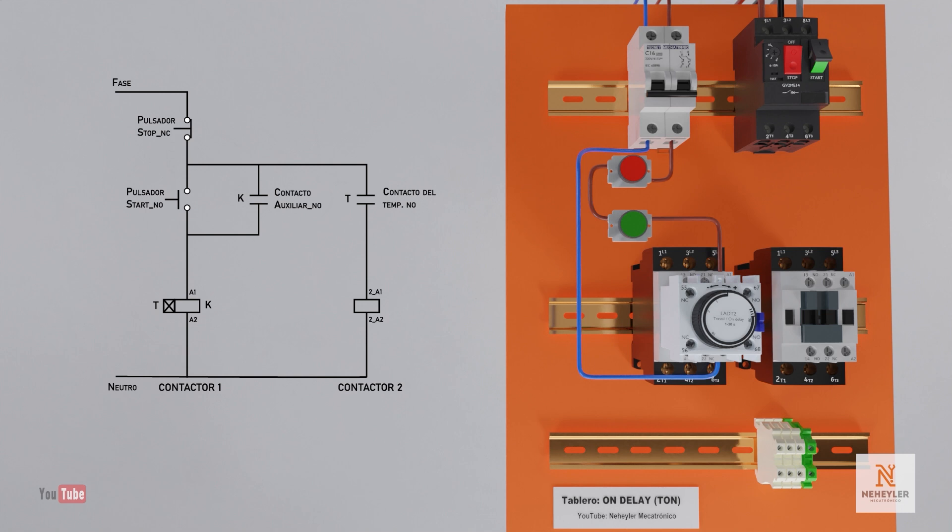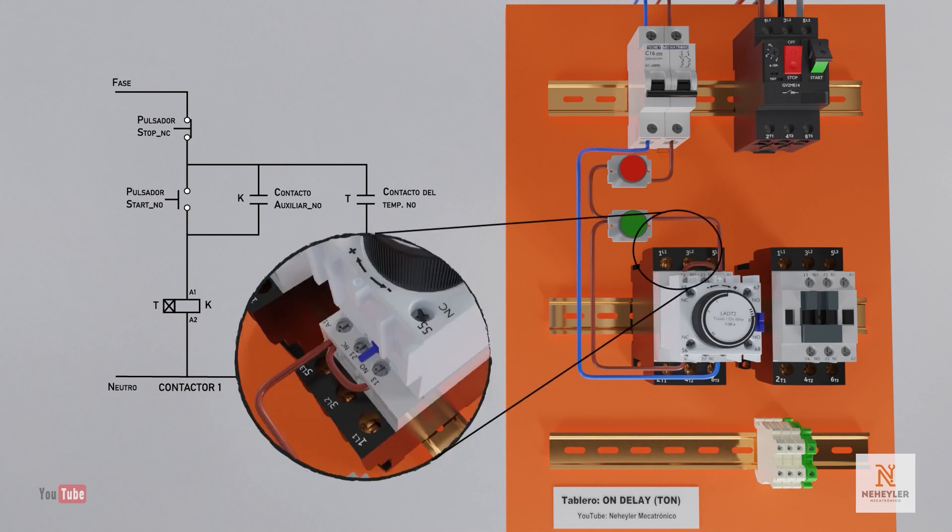Now, to make the contactor self-retaining and for its coil to remain energized, a cable must be connected in such a way that the normally open auxiliary contact 1314 is parallel to the start button.